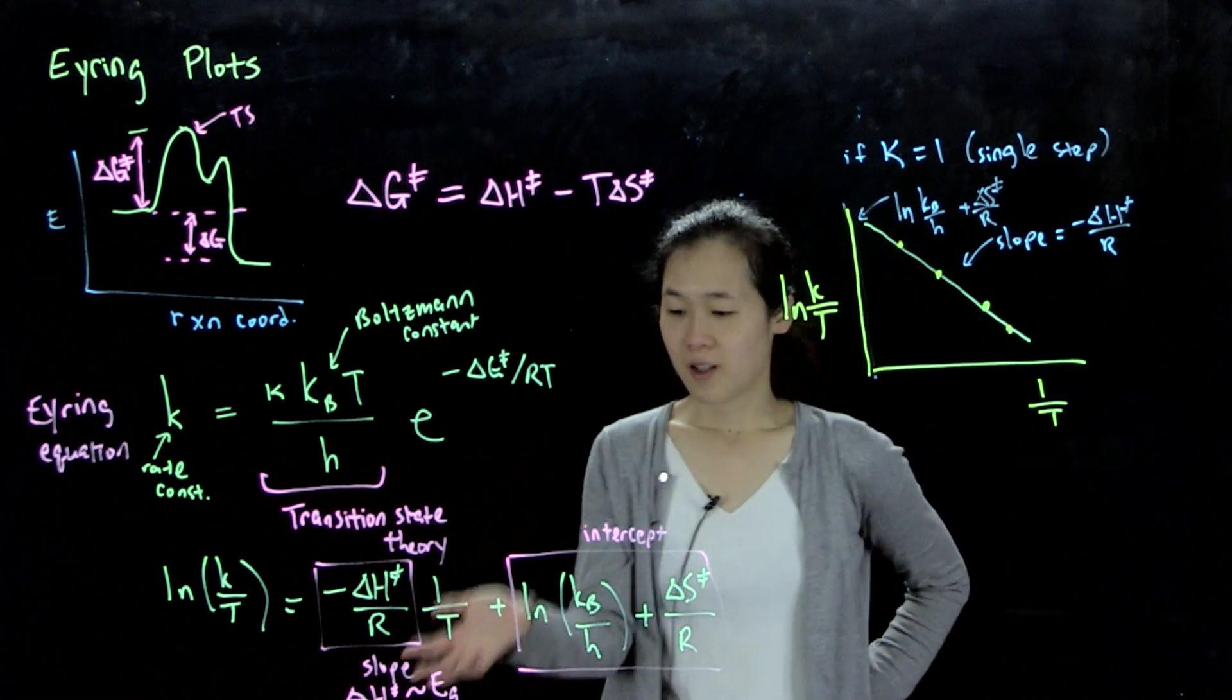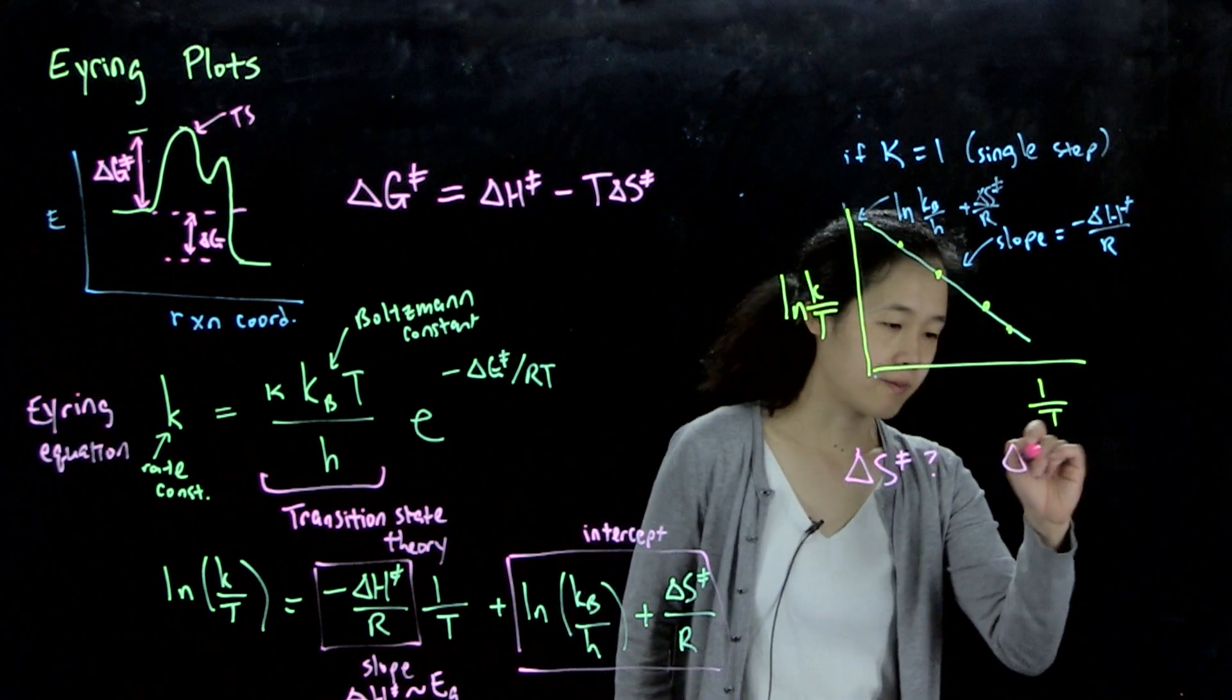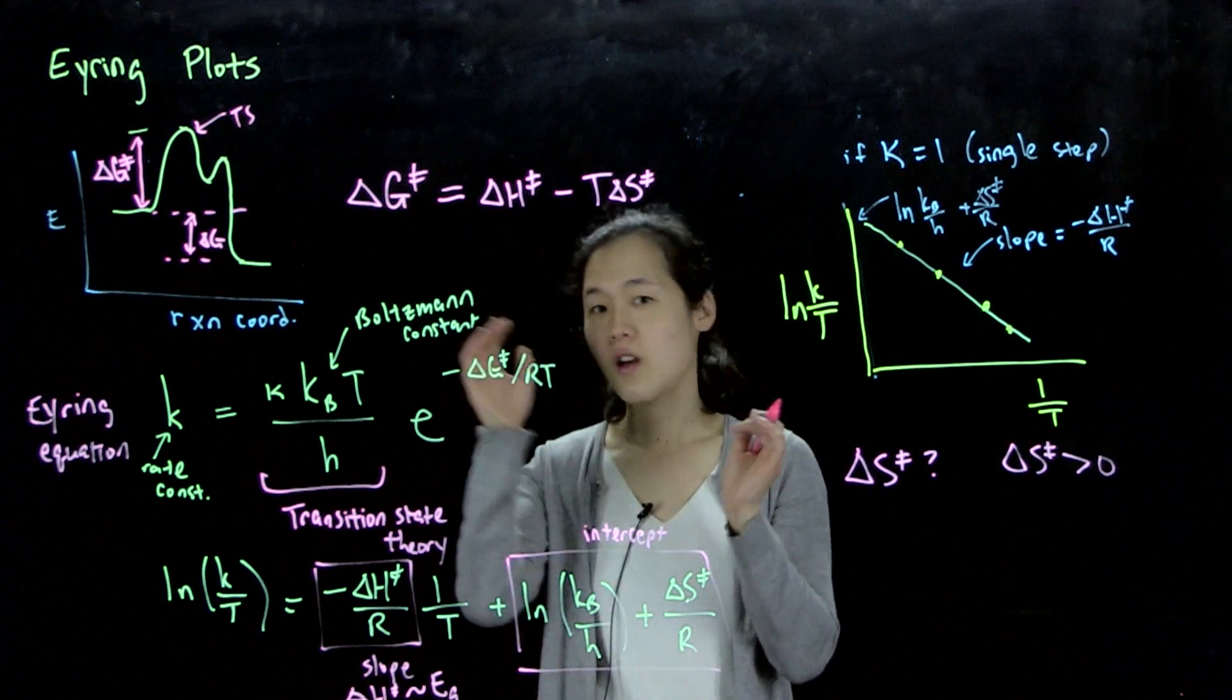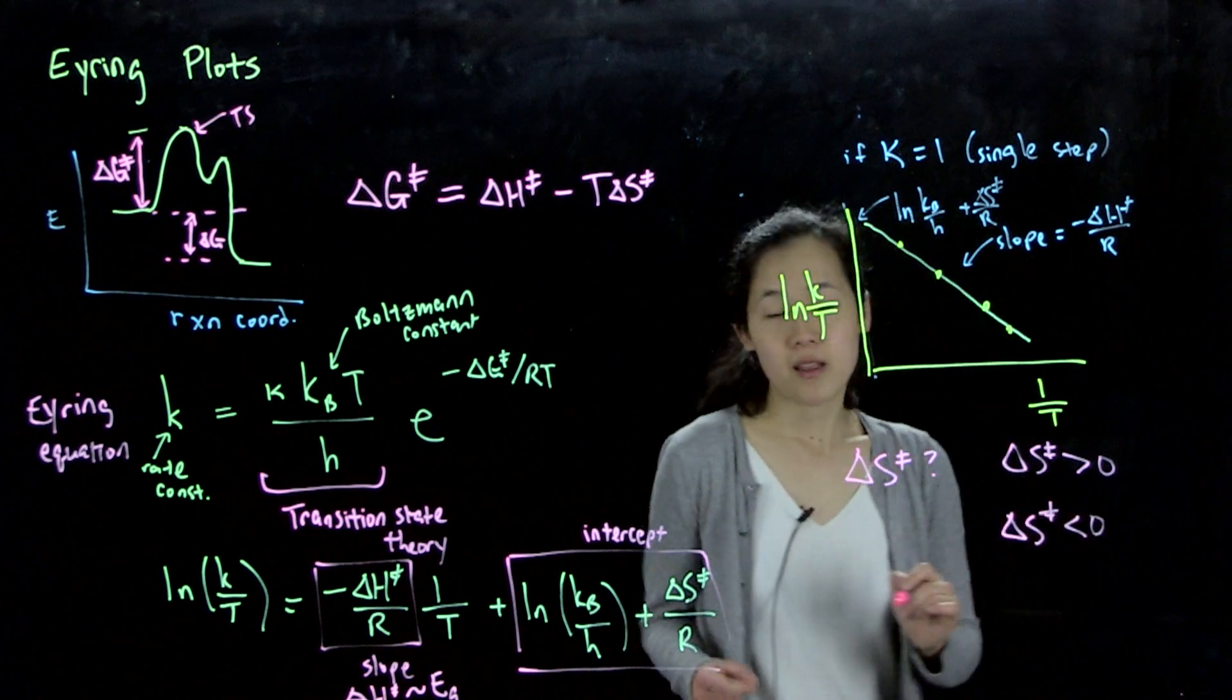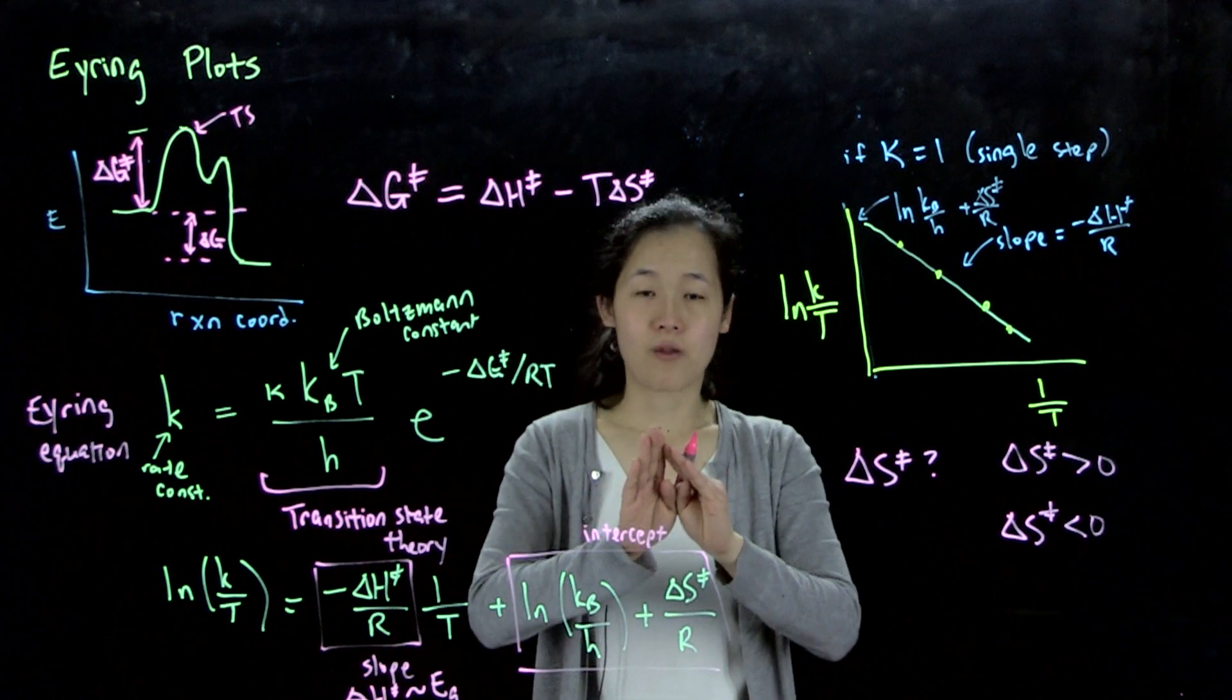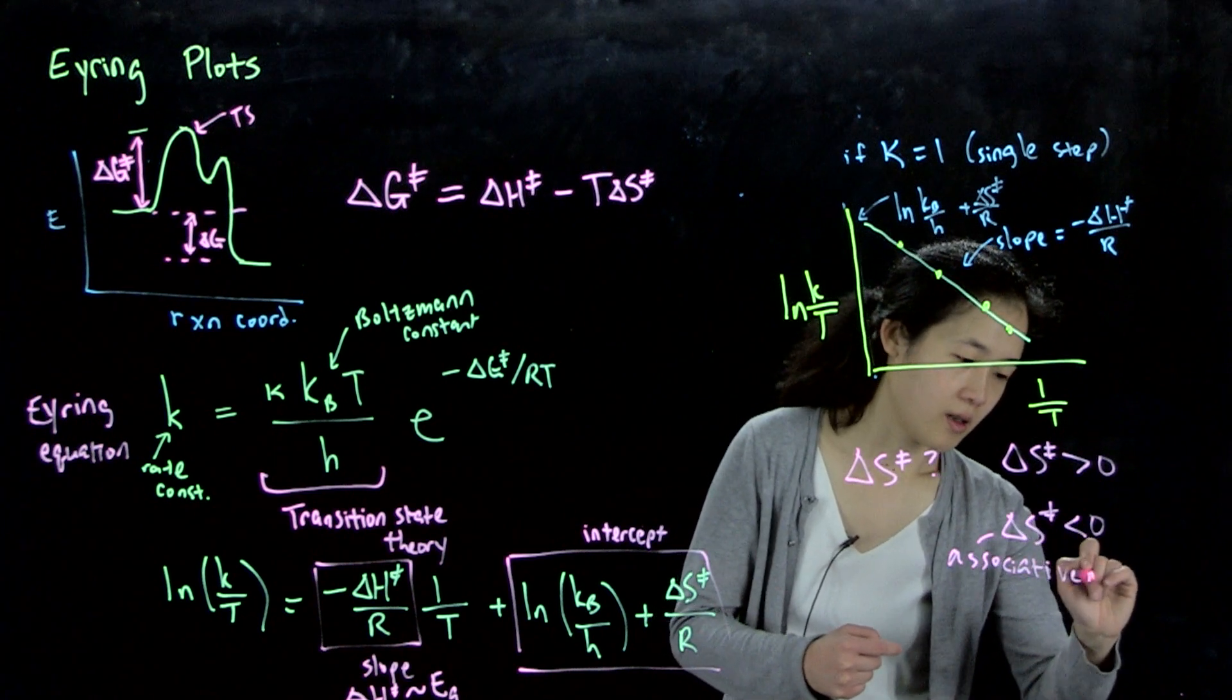So this is more useful than having activation energy because what this means is that, if you think about what the entropic term must mean, so let's think about delta S double dagger. If this is greater than zero, entropy is increasing. And so that means our transition state is less ordered than our starting material. On the contrast, if delta S double dagger is less than zero, that means it's more ordered, right? We've lost entropy. So what this means is that, if you think about having, let's say, an SN2 mechanism, where you have a bimolecular thing, the molecules have to arrange in a very specific orientation for the reaction to occur. So for that kind of associative mechanism, you might expect the entropy of activation to be less than zero.